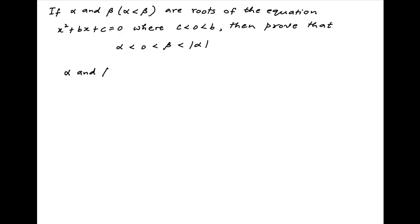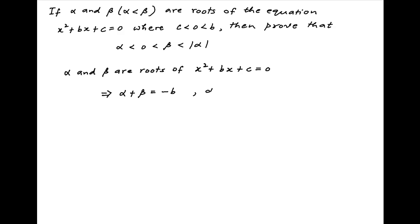We are given that alpha and beta are roots of the quadratic equation x squared plus bx plus c equals 0. Therefore, the sum of the roots alpha plus beta is equal to minus b, and the product of the roots alpha times beta is equal to c.